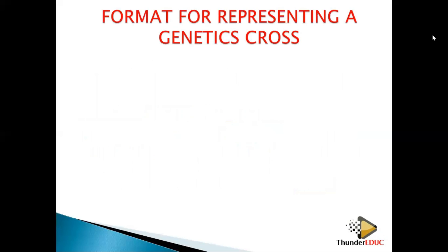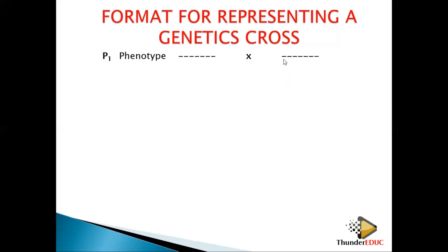Let's look at how we mark in exams — if you miss something, you don't get the mark. Number one: whenever they give you a genetic cross, you write P1, which means parent one. Then you write the phenotype — the physical expression of an organism. For example, a dark-skinned man marries a light-skinned lady — that is the phenotype.